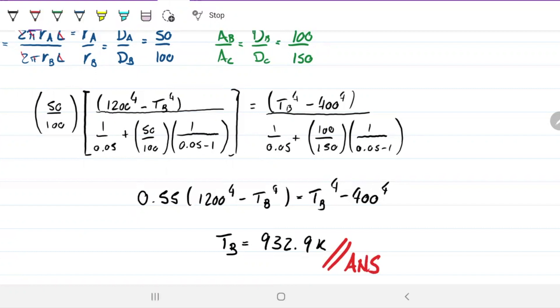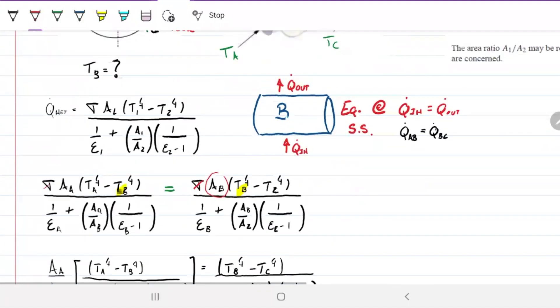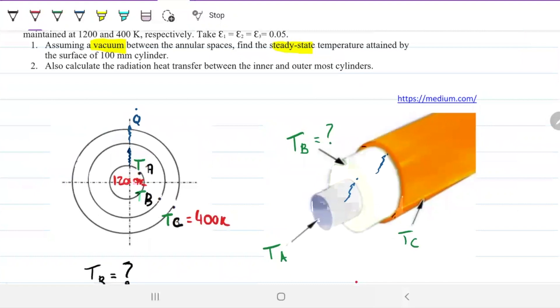Once we have that, then solving the second part of the problem is very straightforward. The second part of the problem is: calculate the radiation heat transfer between the inner and the outermost cylinders. It's asking us to calculate the Q from A to C. But we note that the energy that leaves A and goes to B is the same as the energy that leaves B and goes to C at steady state. Therefore the energy that goes from A to C is the same one as well.